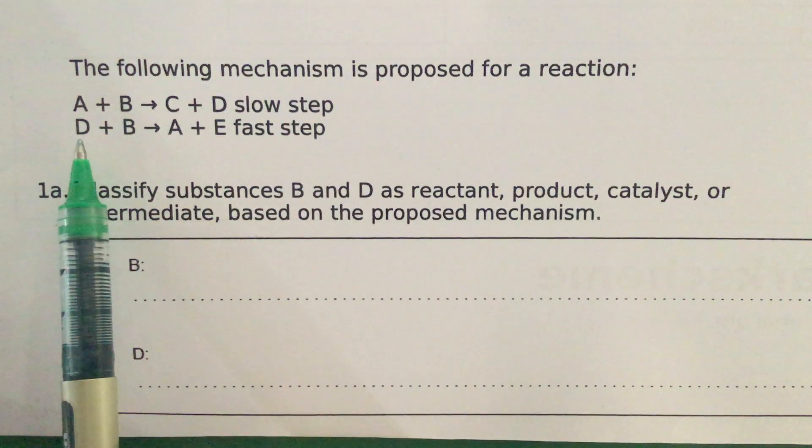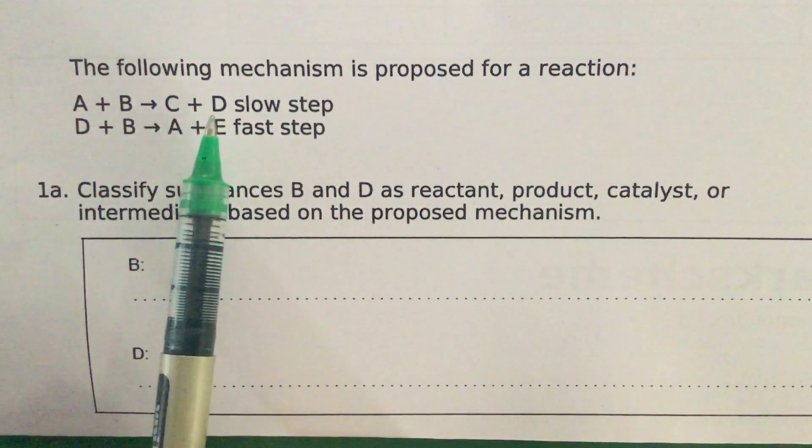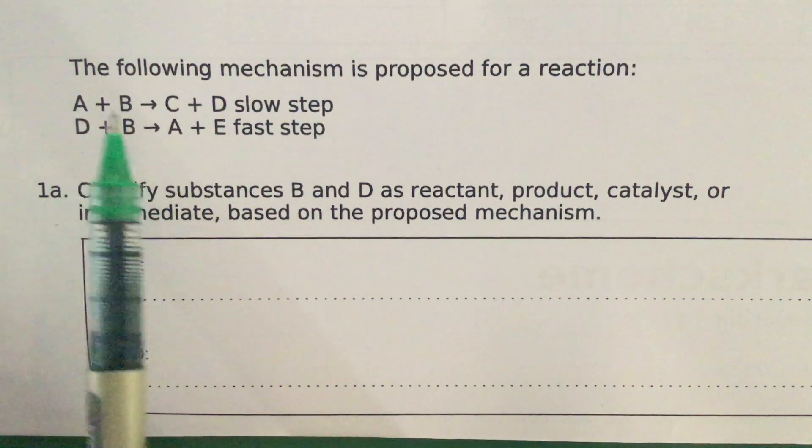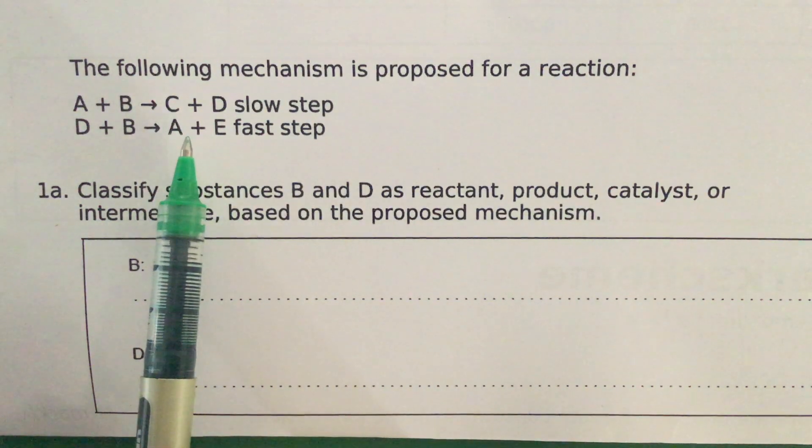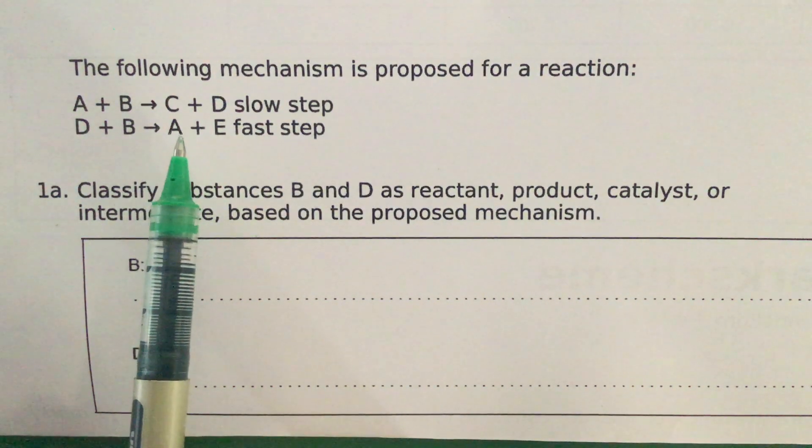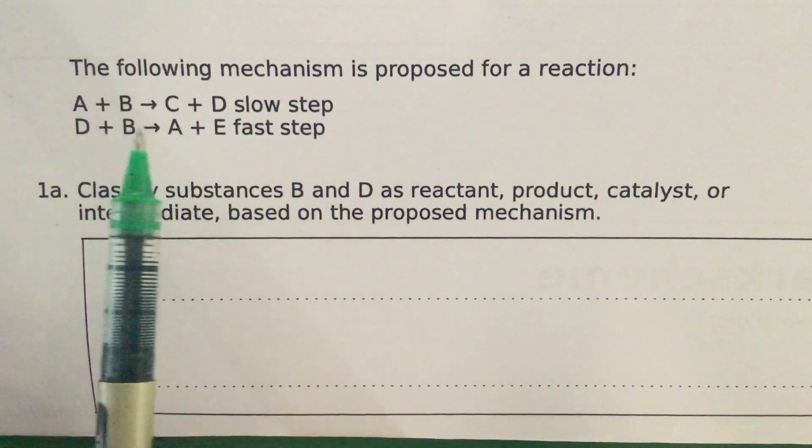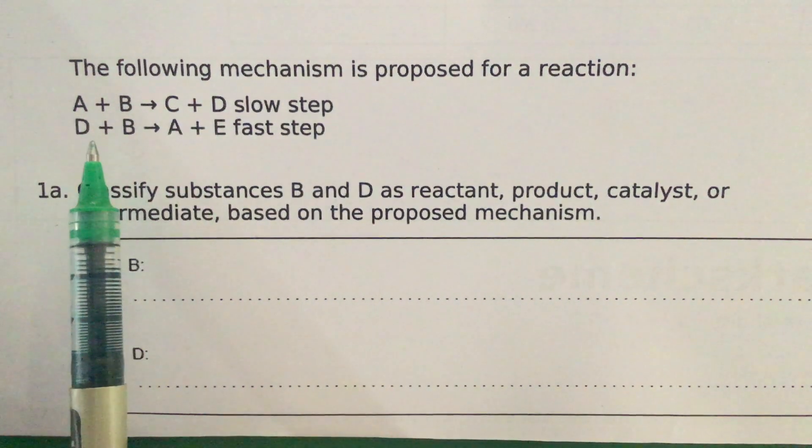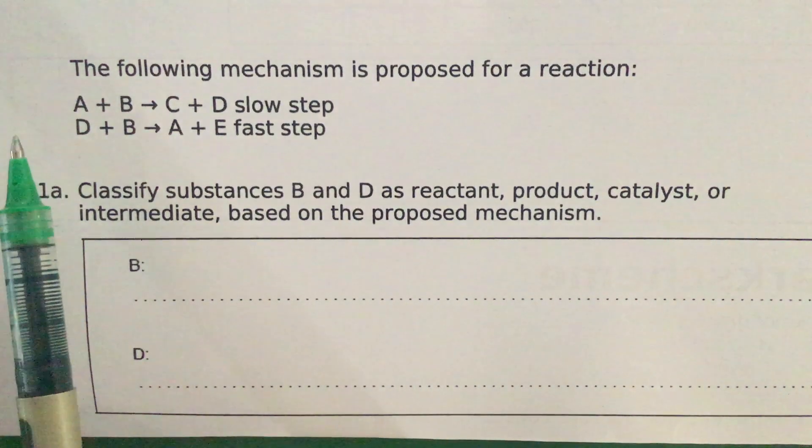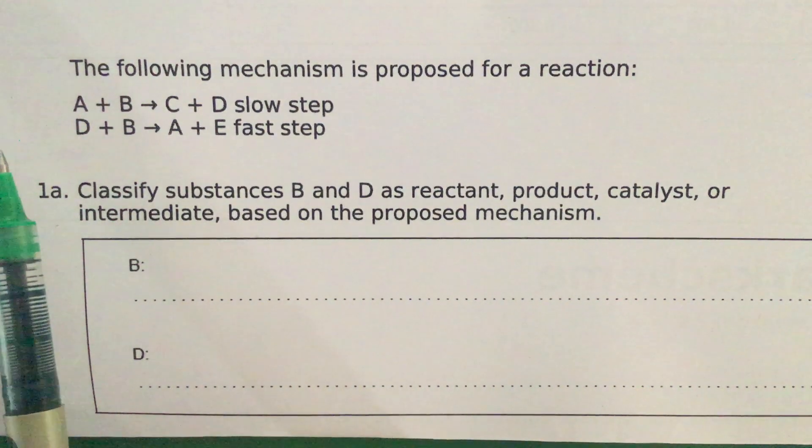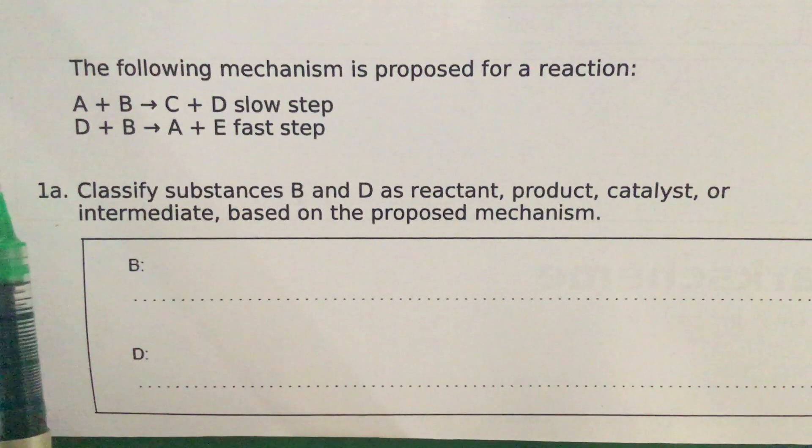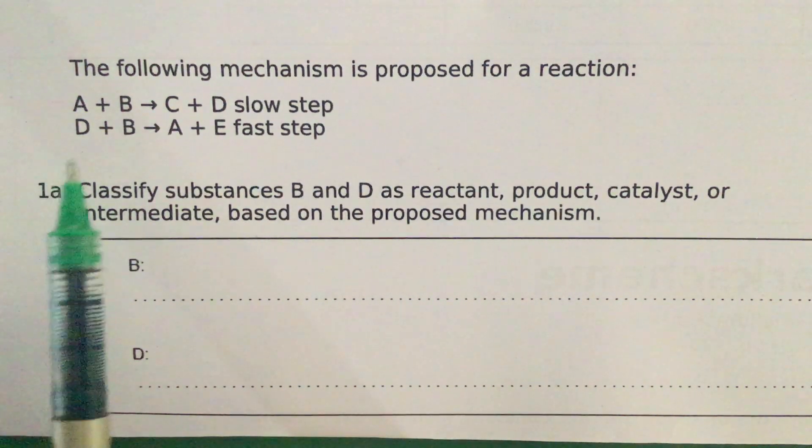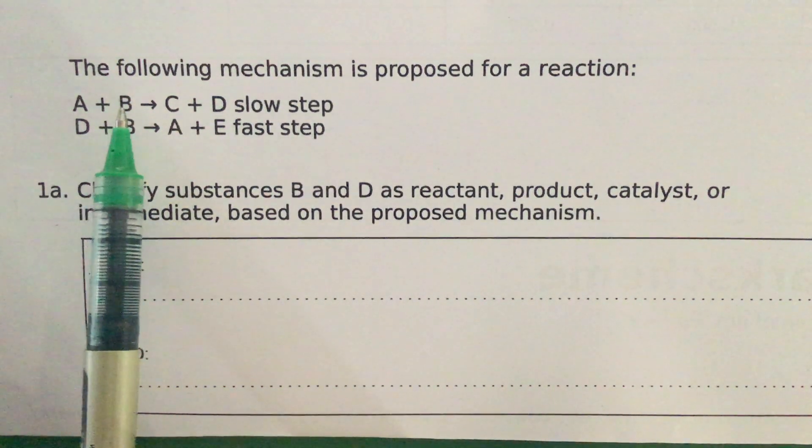in the second step. And D does not appear in reactants, it does not appear in products. D therefore is an intermediate. A is a catalyst, D is an intermediate. You're not asked about A, but just in case in another question at another time, please note that A is a catalyst. And B of course is a reactant, very much